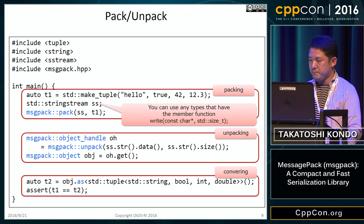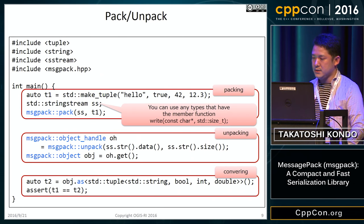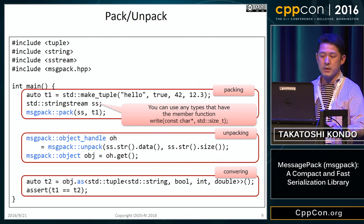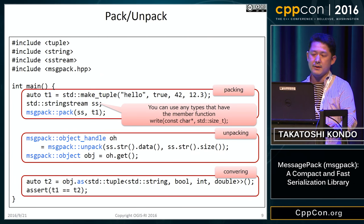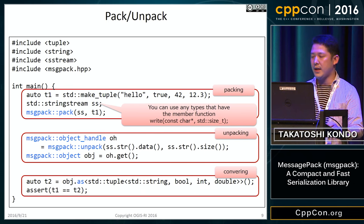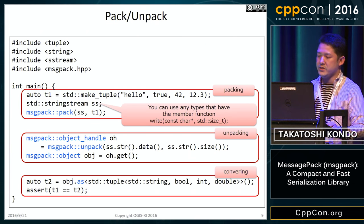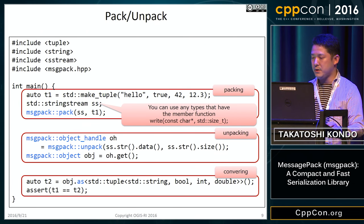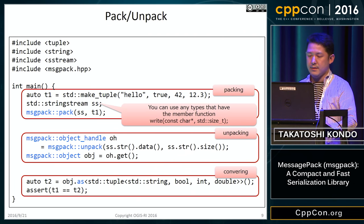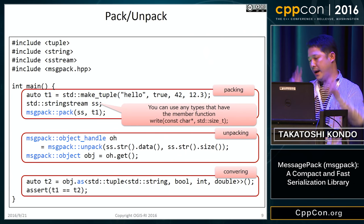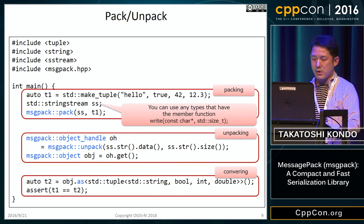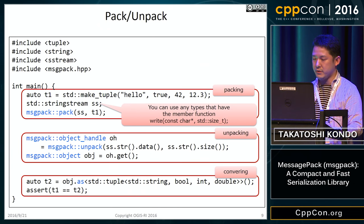Let's look at a code example. The client needs to include msgpack.hpp. The C++ version of MessagePack is a header-only library. The top part of the code example demonstrates how to pack a tuple. We can generate a byte stream in MessagePack format using the pack function. The first argument of the pack function is a stream — an object of any type that has a write member function.